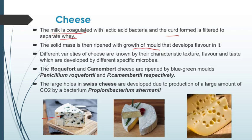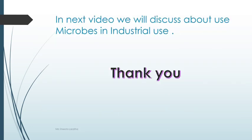Look at this beautiful Swiss cheese — you can see the big holes produced because large amounts of carbon dioxide escape. The bacterium responsible for these holes is Propionibacterium sharmanii. This is all about cheese. In the next video we will discuss how microbes are used in industrial applications. Thank you.